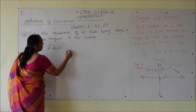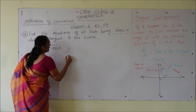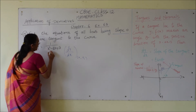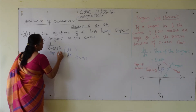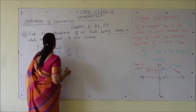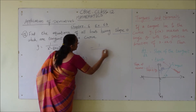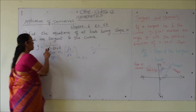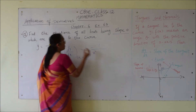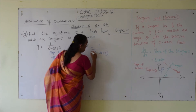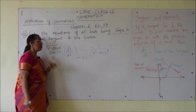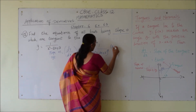Similar to previous problems, dy/dx at a particular point (x1, y1) gives the slope of the tangent to the curve. The differentiation of 1 over (x squared minus 2x plus 3) is negative 1 divided by (x squared minus 2x plus 3) whole square, by the chain rule, multiplied by the differentiation of (x squared minus 2x plus 3) which is 2x minus 2.